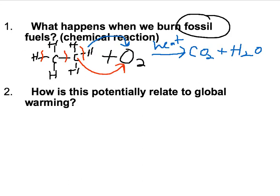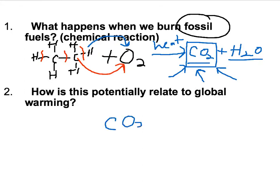When those atoms rearrange, you end up with carbon dioxide and water. Those are the two main things that come out of the tailpipe of your car, or any time you burn a fossil fuel — burning wood in your stove does the same thing. It's this carbon dioxide that most scientists would say is responsible for potential global warming. It's actually the CO₂ that is responsible.